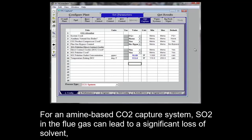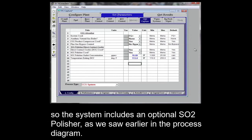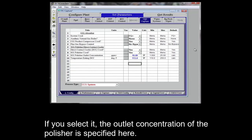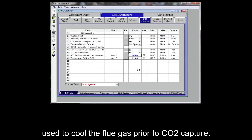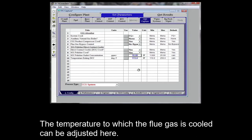For an amine-based CO2 capture system, SO2 in the flue gas can lead to a significant loss of solvent. So the system includes an optional SO2 polisher, as we saw earlier in the process diagram. If you select it, the outlet concentration of the polisher is specified here. In the system design, the SO2 polisher is coupled with a direct contact cooler used to cool the flue gas prior to CO2 capture. The temperature to which the flue gas is cooled can be adjusted here.